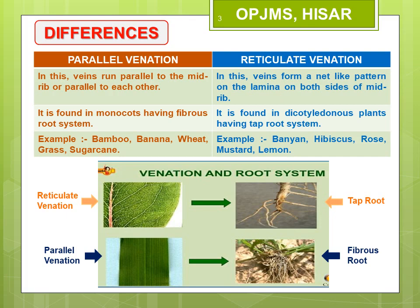Reticulate venation is found in plants like banyan, hibiscus, rose, mustard, lemon, etc. The leaf venation and the type of root system in the plant are related to each other. The plants with reticulate venation in their leaves always have tap root system, whereas those having parallel venation always have fibrous root system. So by looking at the venation, you can guess the root system of a plant without even digging it. Always remember that.